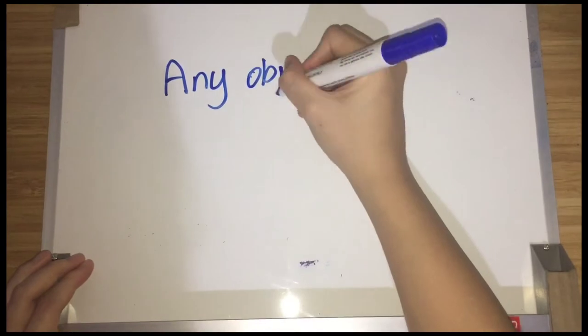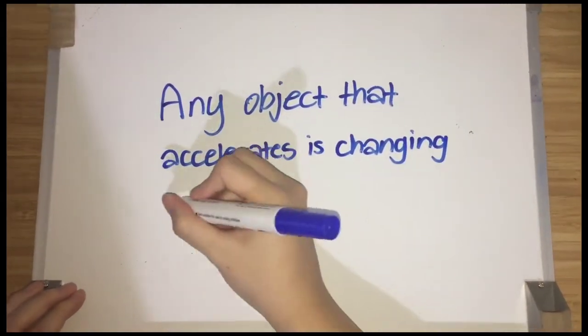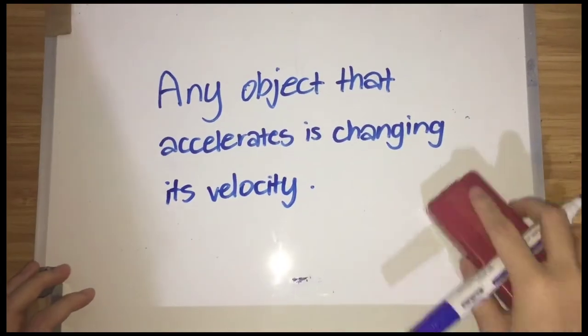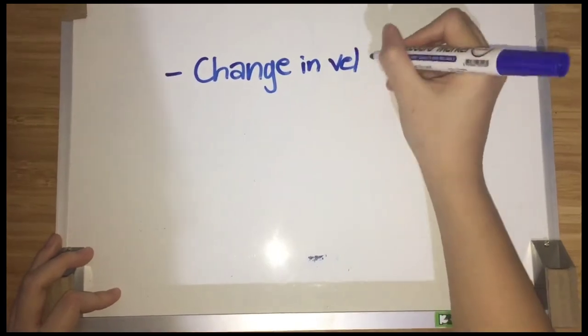In other words, any object that accelerates is changing its velocity. A point or an object moving in a straight line is accelerated if it speeds up or slows down.